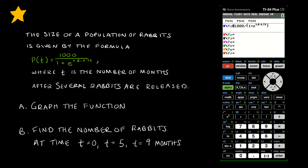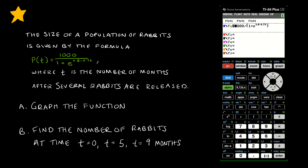Welcome back to those of you who were waiting to see the yellow star. Now we're going to take a look at a question involving the logistic growth function. The question says the size of a population of rabbits is given by P(t) equals 1,000 divided by 1 plus e^(4.8 minus 0.7t), where T is the number of months after several rabbits are released. We'll graph the function and find the number of rabbits at time 0, 5, and 9 months.